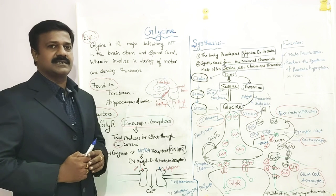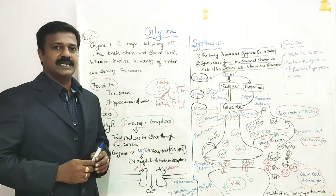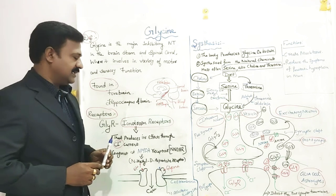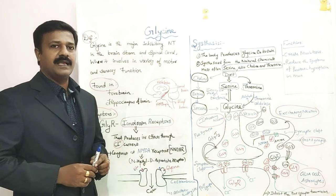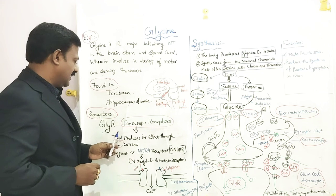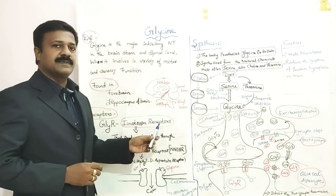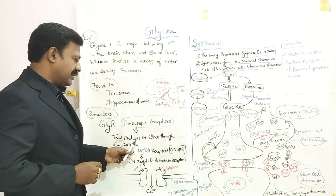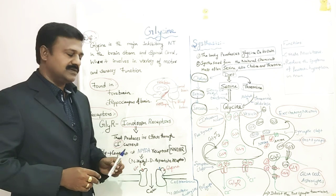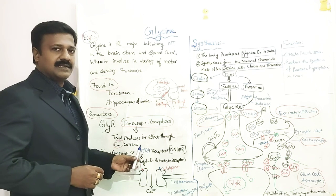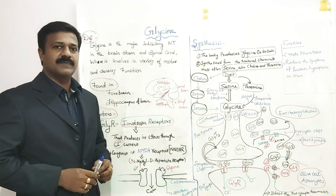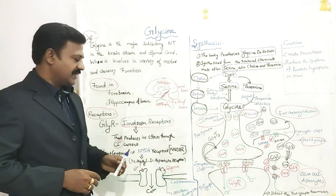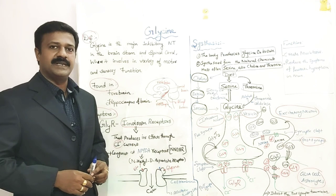Then what are the receptors involved in the binding of the Glycine neurotransmitters? Glycine receptors are a type of ionotropic receptor. These ionotropic receptors produce their effects through chloride current. That means the releasing of chloride ions from the ionotropic receptors produces the inhibitory effect.